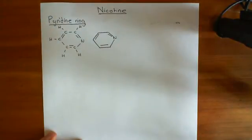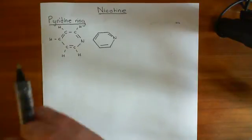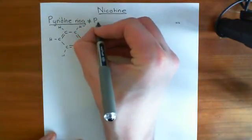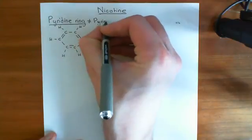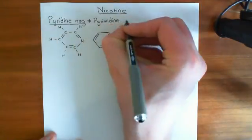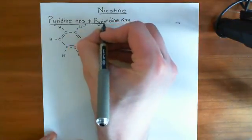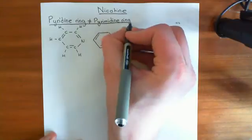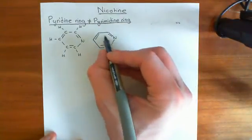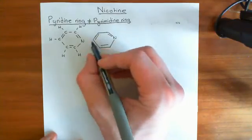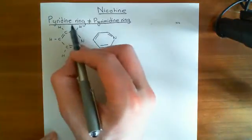Nicotine is going to have a pyridine ring within its structure. A pyrimidine ring is something different — this is not, I repeat, not equal to a pyrimidine ring. The pyrimidine ring is what you have in the DNA organic bases, and it has two nitrogens in this aromatic ring. This here is a pyridine ring, not a pyrimidine ring.